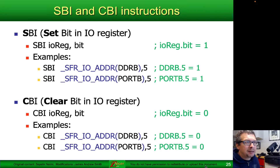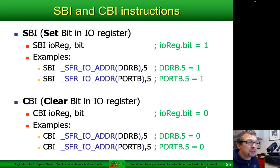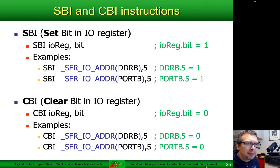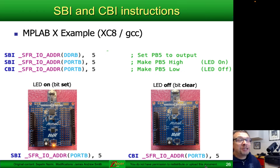SBI SFRIO address DDRB comma 5 makes DDRB bit 5 equal to 1. Then SBI SFRIO address port B comma 5 actually lights up the LED on port B bit 5. Conversely, we can clear things — using CBI we can set the data direction for port B bit 5 to 0. If we also clear port B bit 5, that puts it into regular high-impedance mode rather than engaging the pull-up resistor.